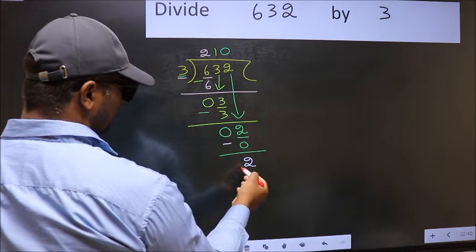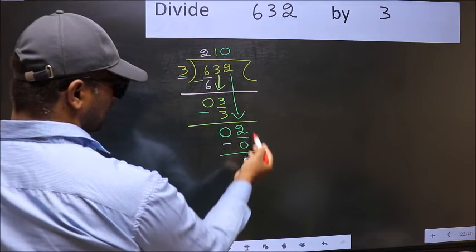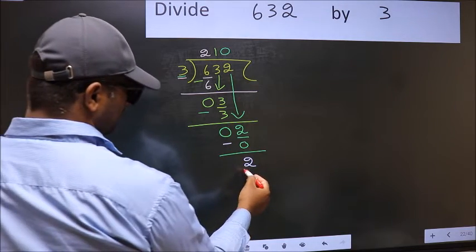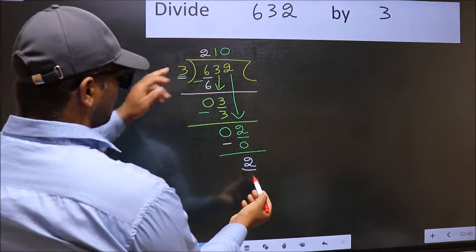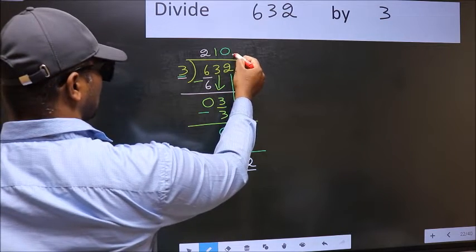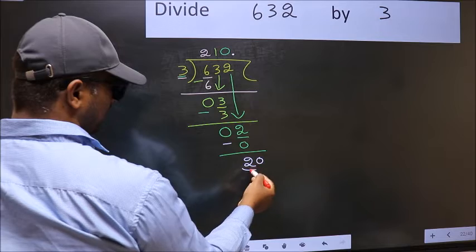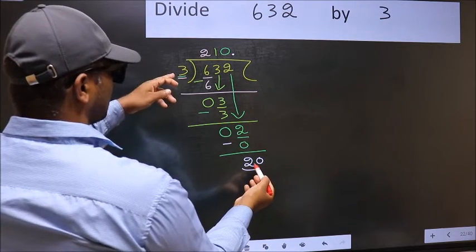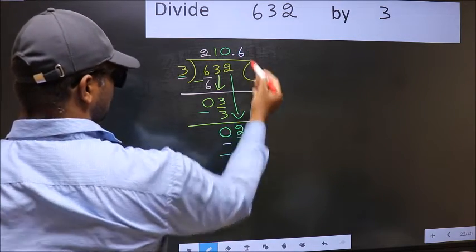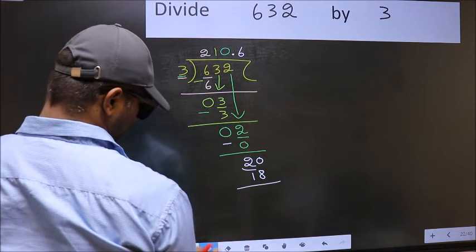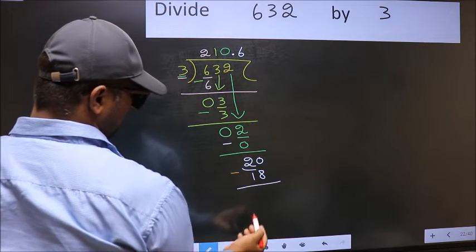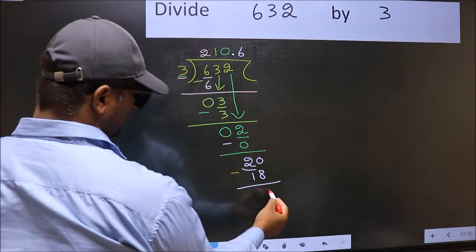Over here, we did not bring any number down. And 2 is smaller than 3. So now you can put a dot and take 0. So 20. A number close to 20 in the 3 table is 3 times 6, 18. Now you should subtract. 20 minus 18, 2.